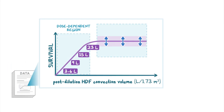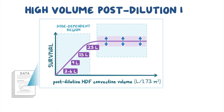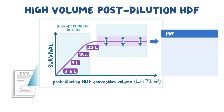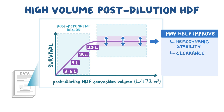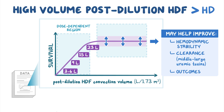Data from several studies suggest that high-volume post-dilution hemodiafiltration, HDF, with convection volumes greater than 23 liters per 1.73 square meters per session may help to improve hemodynamic stability, clearance particularly of middle-large uremic toxins, and outcomes in dialysis patients compared to conventional hemodialysis, HD.